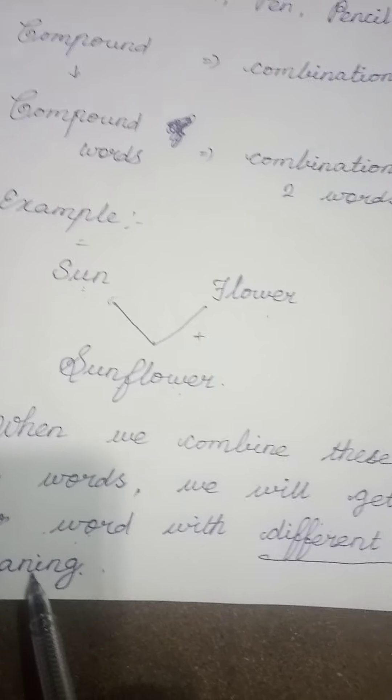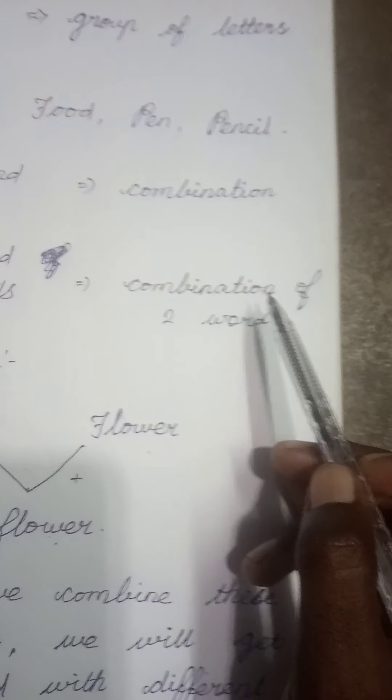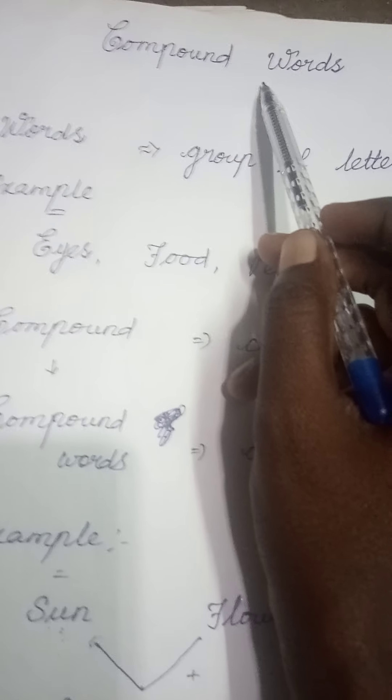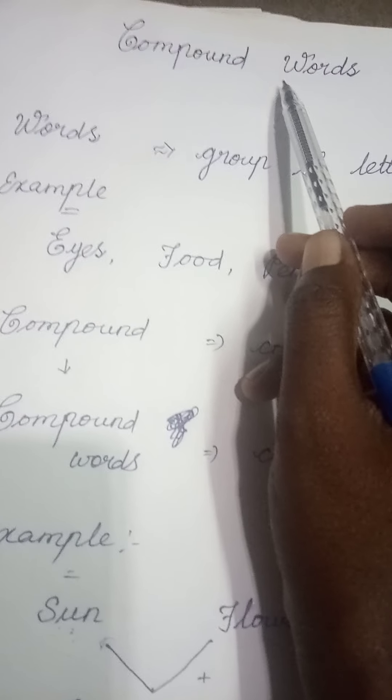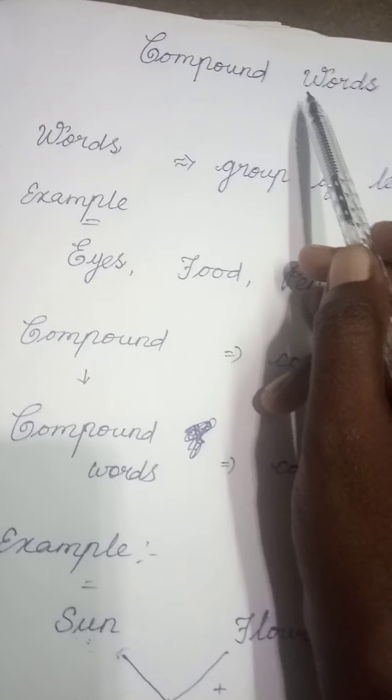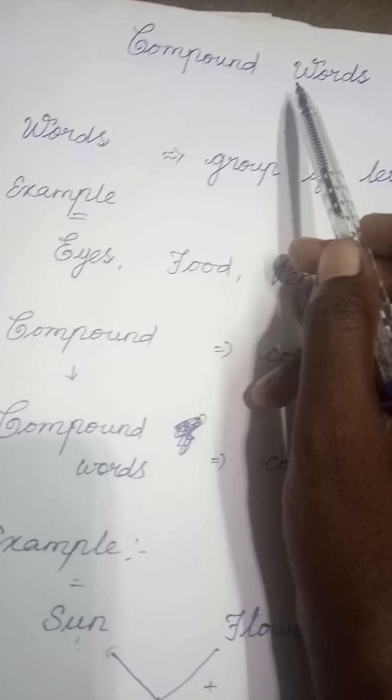So, what is compound words? If we combine two words, we will get a new word with different meaning. Combination of two words is called compound words. Okay, my dear students. Are you clear? I hope you are very much clear in this compound words. Thank you, my dear students.